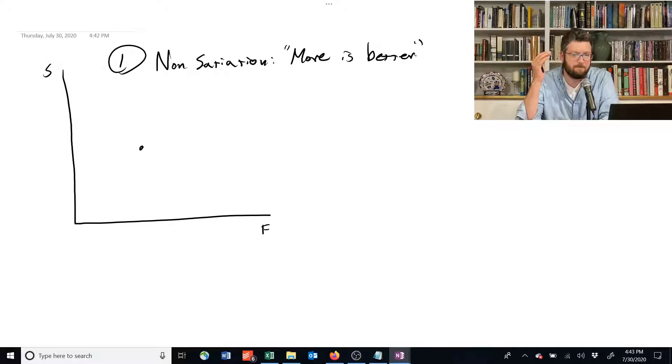And that means that all else equal, if you have the option between two different bundles, each one includes some shelter and some food, if one of those has more of both, it's preferred. So if we imagine taking this allocation as our starting point, we can divide the space up as such.